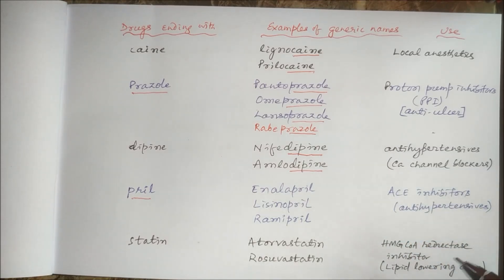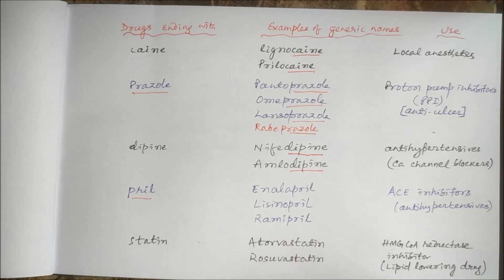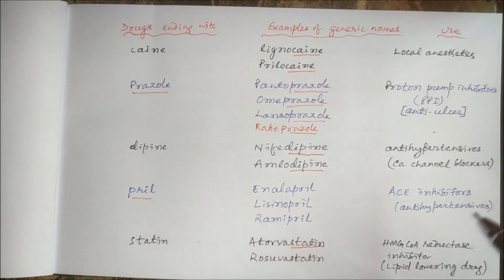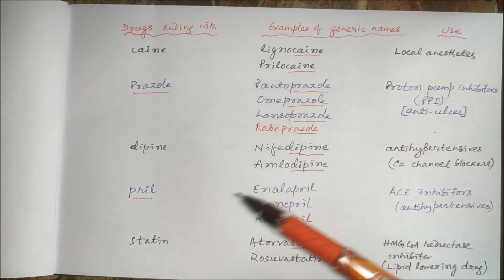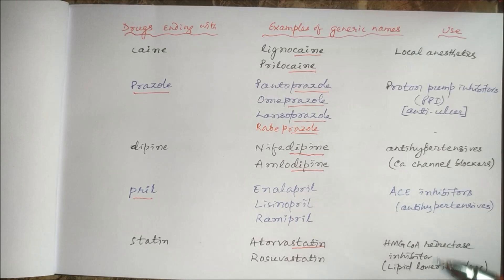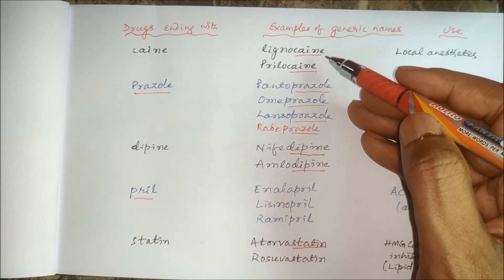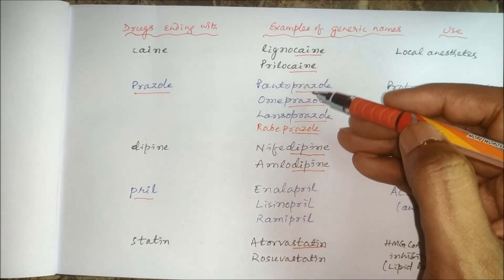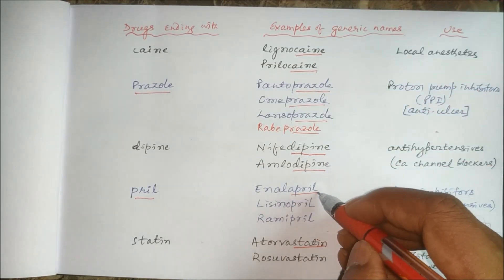Then let us take another example: statins, or HMG-CoA reductase inhibitors. These are the lipid-lowering drugs which inhibit the synthesis of cholesterol. Examples are atorvastatin and rosuvastatin — they end with '-statin'. So generic names for a class of drugs end with similar-sounding words like -caine, -prazole, -dipine, -pril, -statin, and so on.